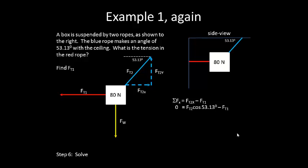Now using my triangle, I can see that FT2x is FT2 times cosine of 53.13 degrees, minus FT1. At this point, I'm stuck. I don't have either FT1 or FT2. So I need to consider looking in the other direction, in the y direction.